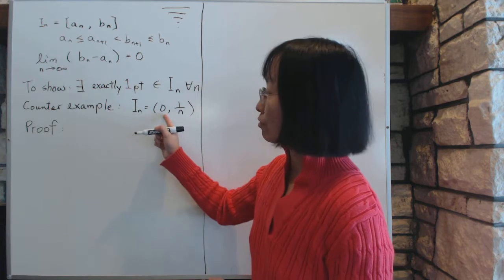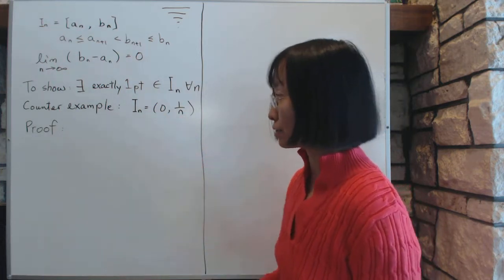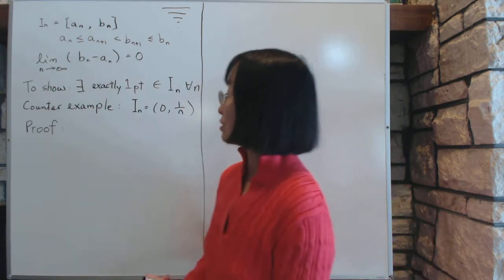Now, in this example, zero, you cannot pick zero itself because the interval doesn't include zero. So the being closed is very, very important.